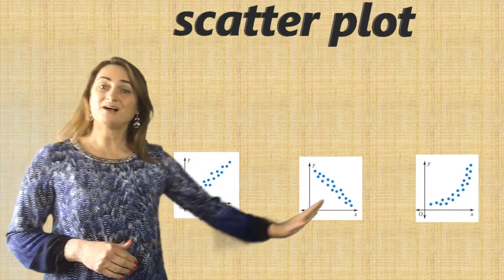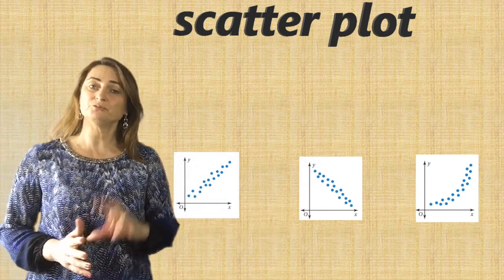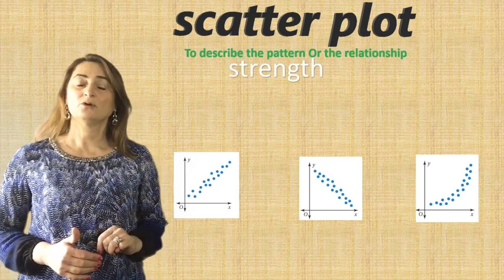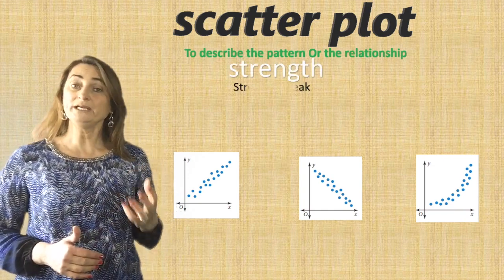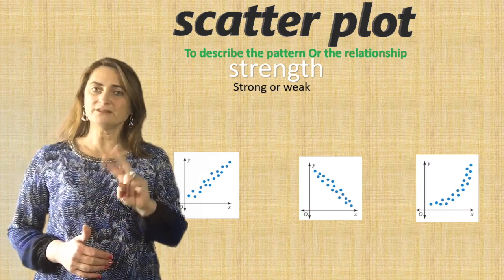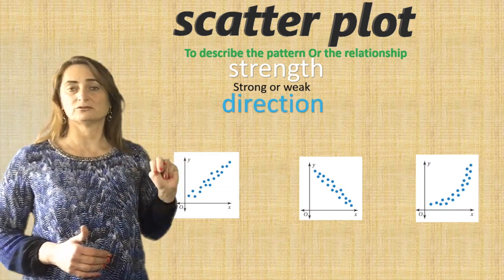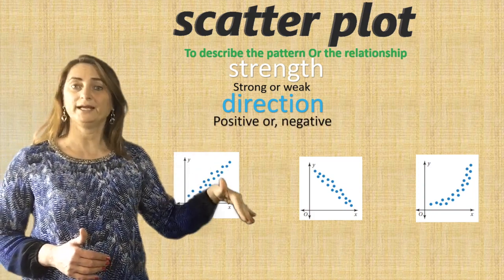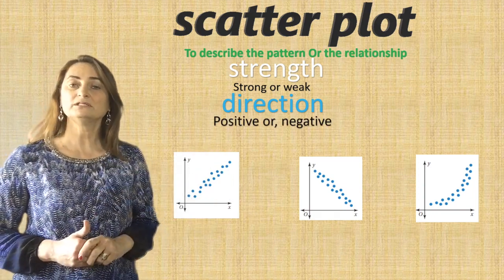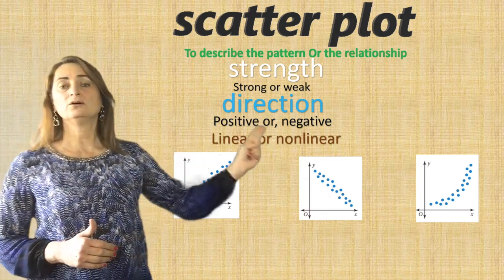Here are the three examples we talked about. To describe that relationship, we need to talk about three things. First is the strength — whether it's a weak or strong relationship. The second thing is direction, whether it's a positive or negative relationship. And the third thing is whether the relationship is linear or non-linear.